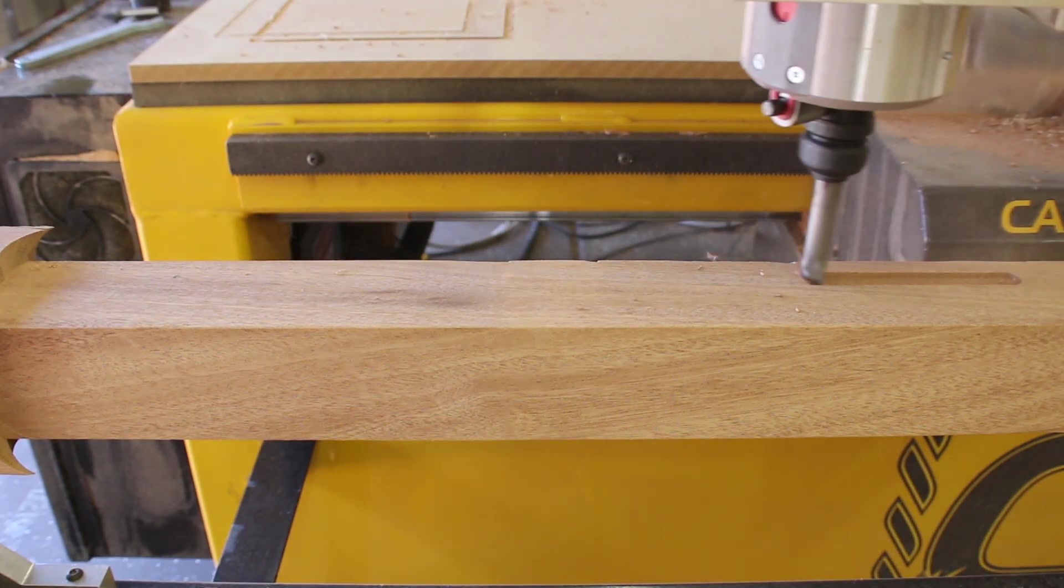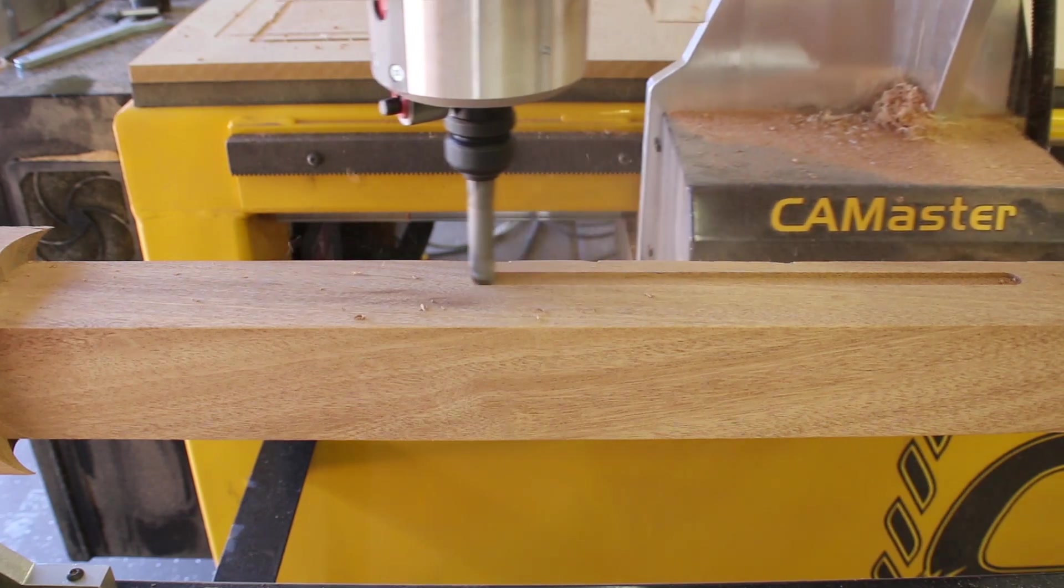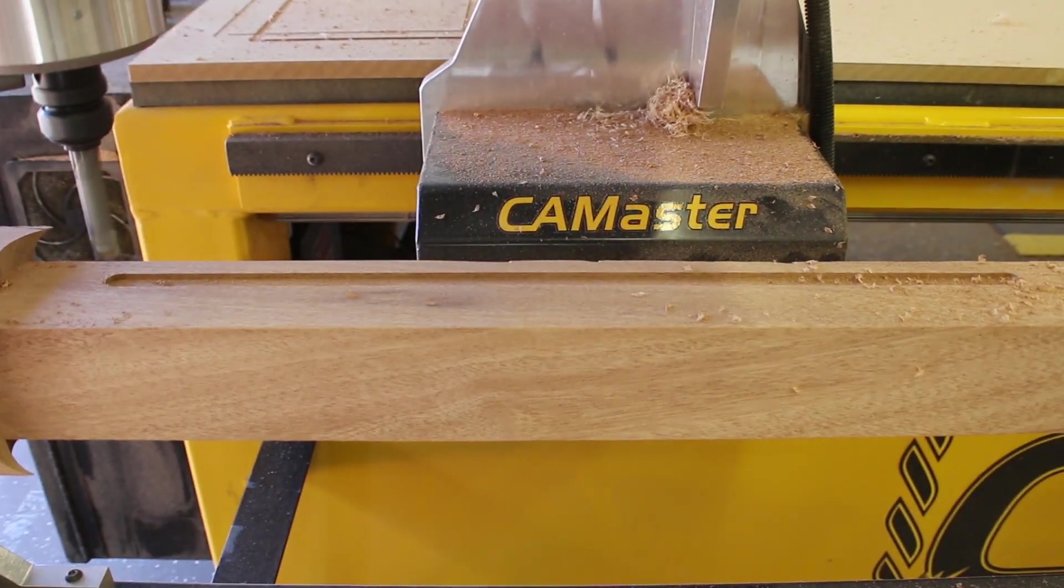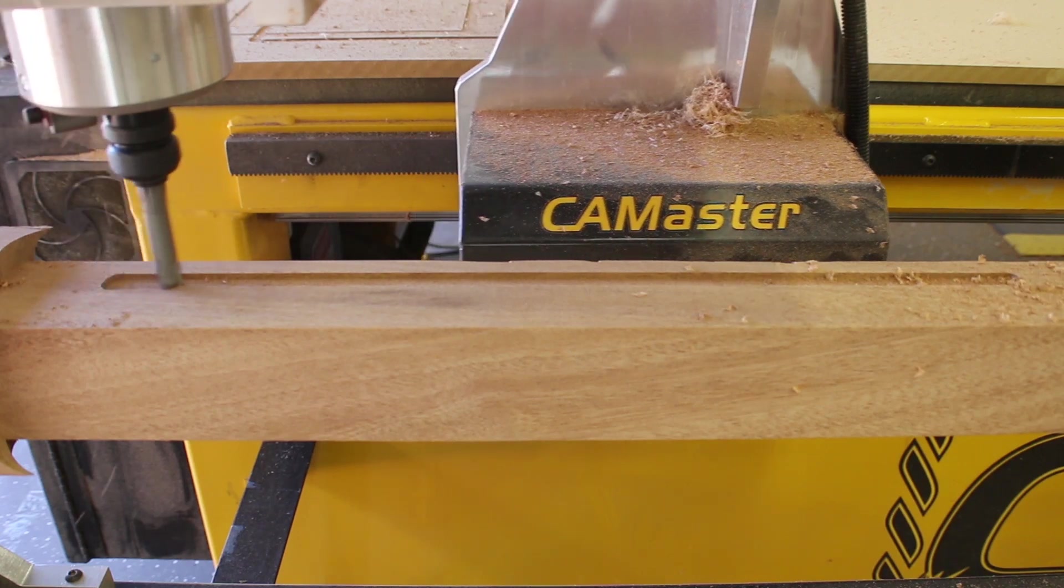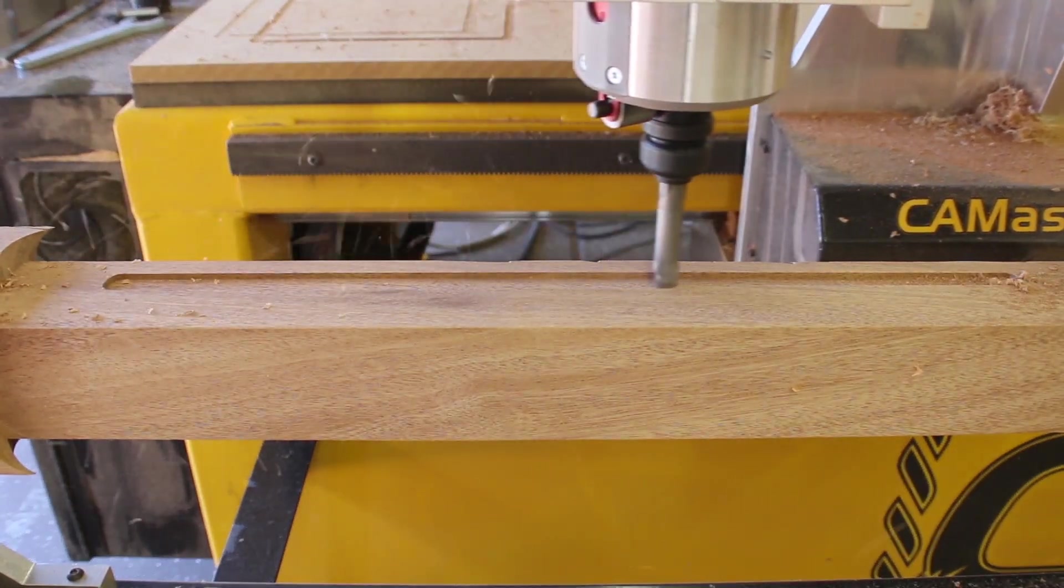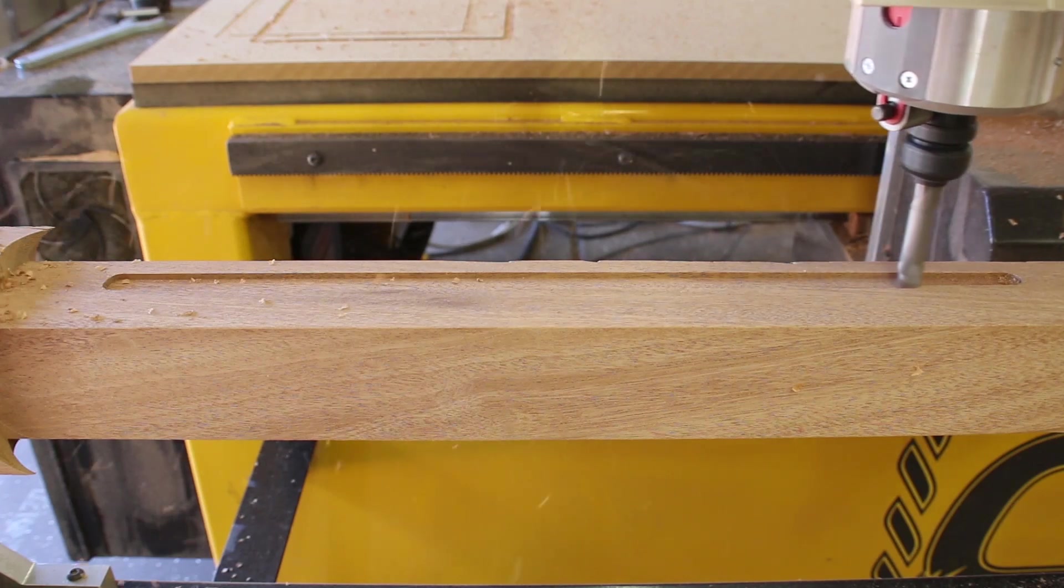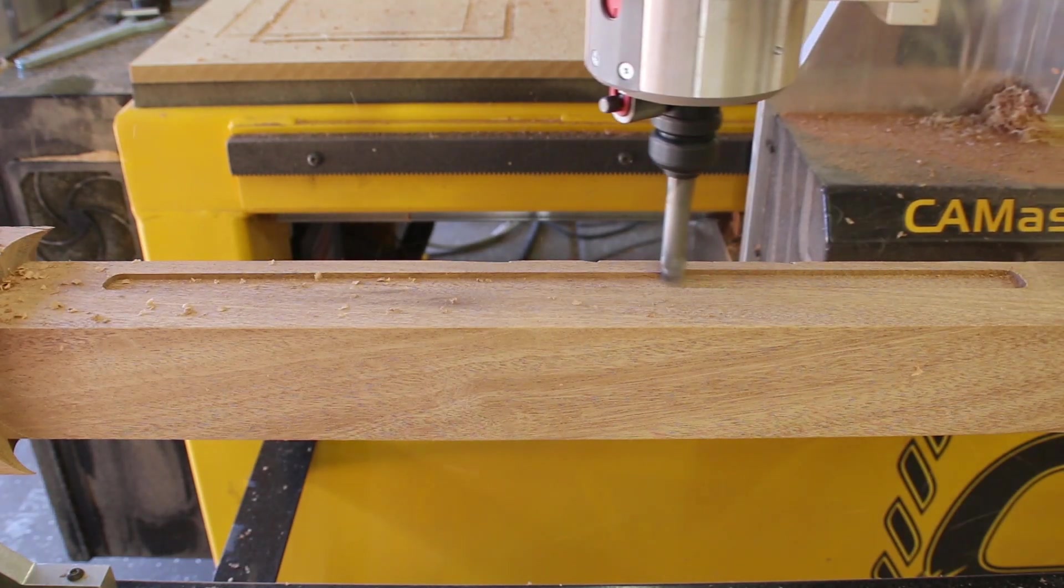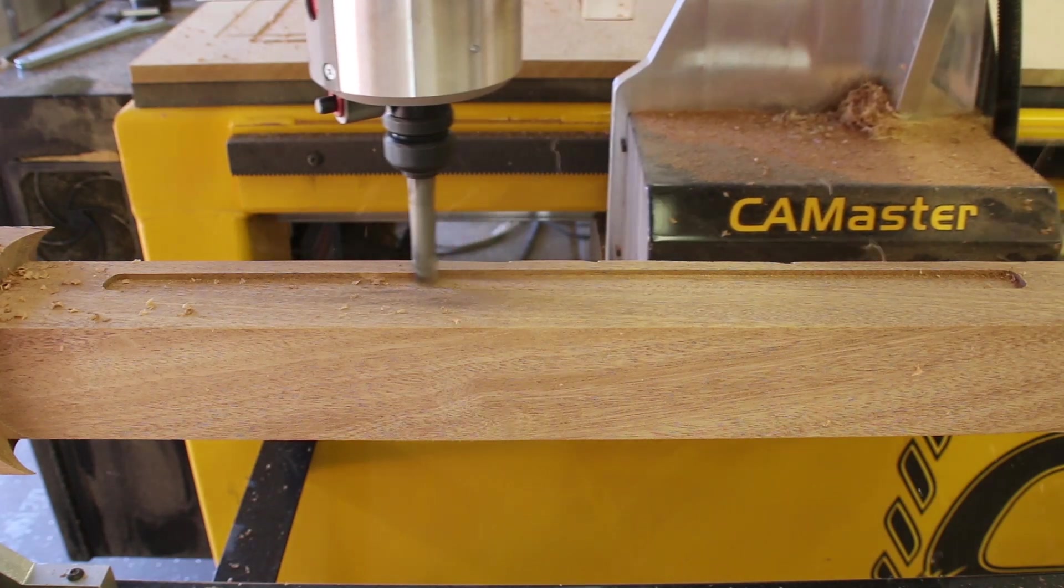And now here we go. This first section here is cutting the dado. And then you're going to see the big, long, three-quarter inch profiling bit, and you'll see the profile of this particular face get cut out. And I'll come back after that and explain what we do next.